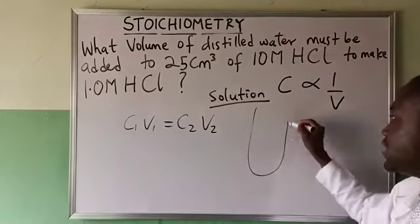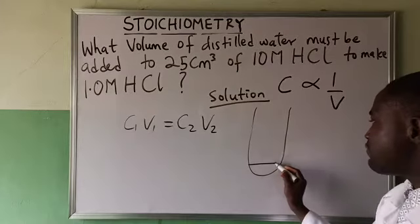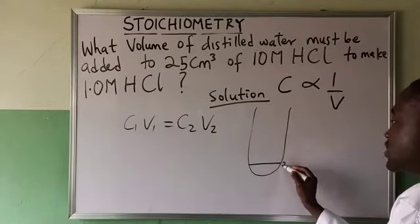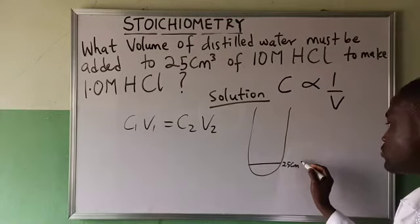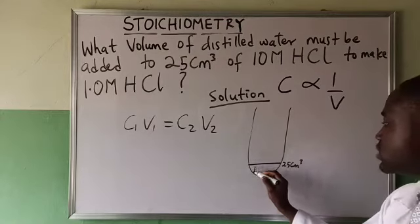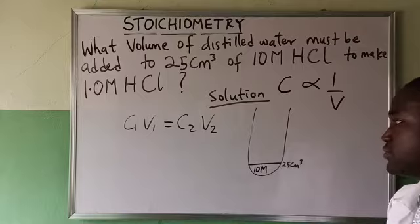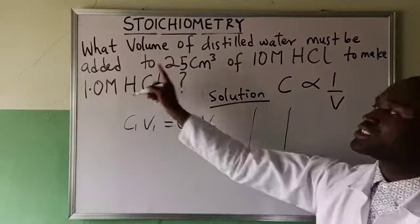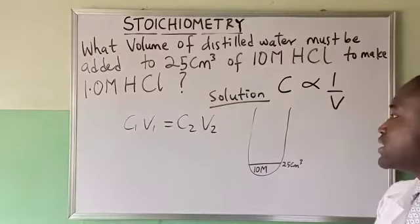Look at this example. I have 25 cm³ of 10 molar HCl. For me to get it toward 1 molar HCl...